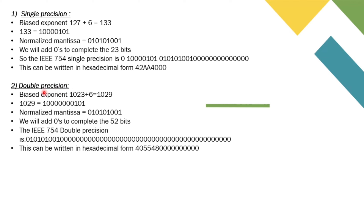Double precision floating point format is a floating point number format usually occupying 64 bits in computer memory. It represents a wide dynamic range of numeric values using a floating radix point. The biased exponent is 1023 + 6 = 1029. In binary format, 1029 is 10000000101. The normalized mantissa is 010101001, and we add zeros to complete the 52 bits. The IEEE 754 double precision value is as shown on the screen, which can also be written in hexadecimal form as 4055480000000000.